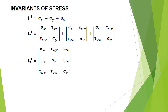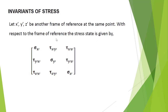The first invariant is sigma x-dash plus sigma y-dash plus sigma z-dash. This is the same as the trace of the matrix — the trace is the sum of the elements in the principal diagonal of a matrix. Here the principal diagonal elements are sigma x-dash, sigma y-dash, and sigma z-dash, so the first invariant equals sigma x-dash plus sigma y-dash plus sigma z-dash.